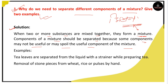For example, the mixture should be separated from the liquid using a strainer while preparing tea. This is one practical example of why separation of components in a mixture is necessary in everyday life.